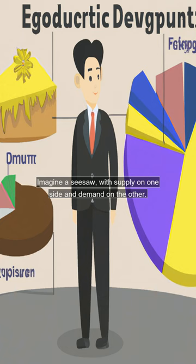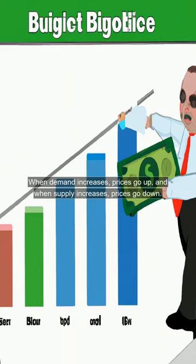Imagine a seesaw with supply on one side and demand on the other. When demand increases, prices go up, and when supply increases, prices go down.